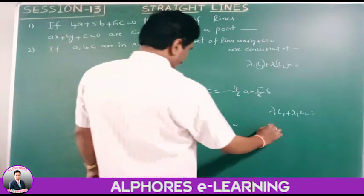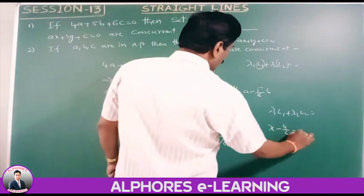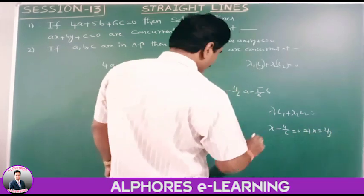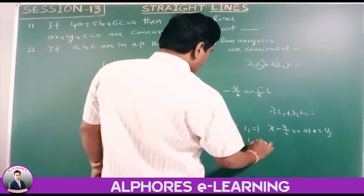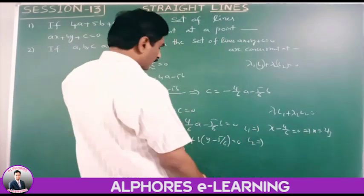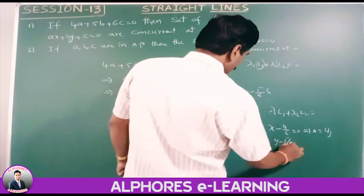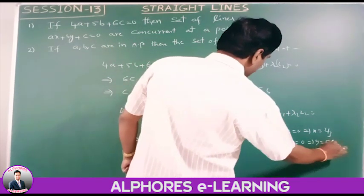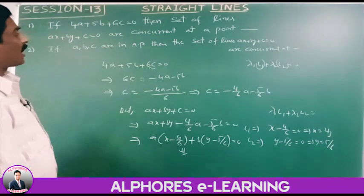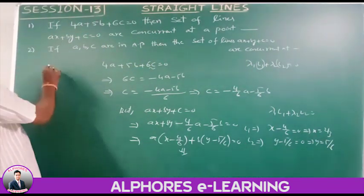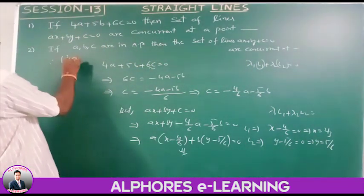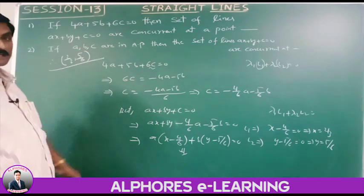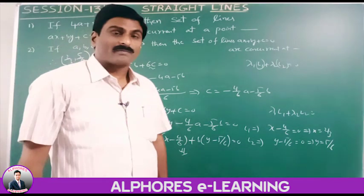The point of concurrency is the intersection of l1=0 and l2=0. From l1: x minus 4/6 equals 0, so x equals 2/3. From l2: y minus 5/6 equals 0, so y equals 5/6. Therefore the point of concurrency is (2/3, 5/6).